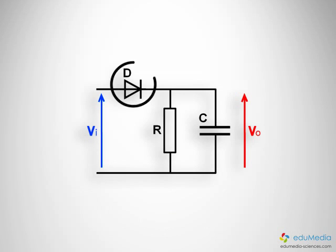The principle of envelope detection with the aid of a diode and an RC circuit is the simplest of demodulating circuits.